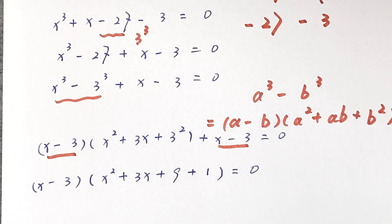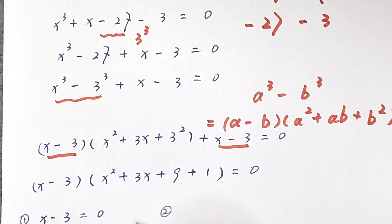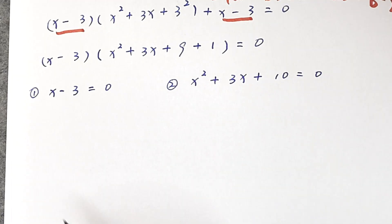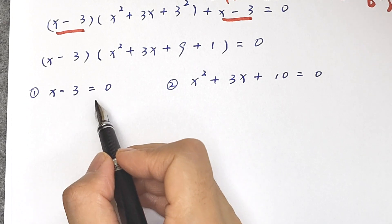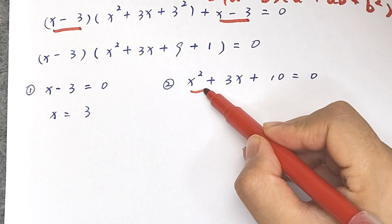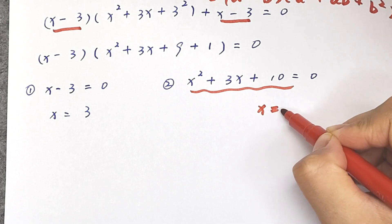We have two cases. Case one: x minus 3 equals 0, which gives x equals 3. Case two: x squared plus 3x plus 10 equals 0.